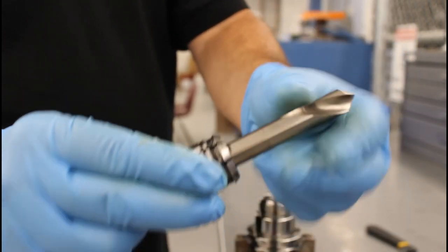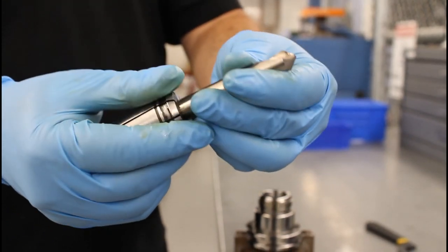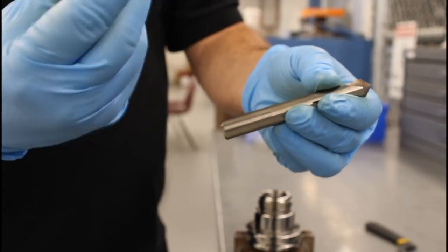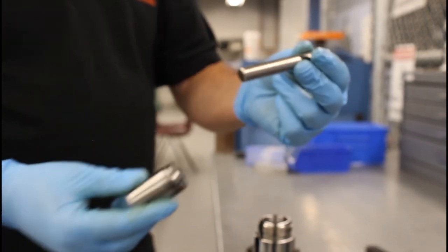This is going to fit perfectly in here - there's no slop, there's no falling off. You've got to make sure that you have the right size collet for the right size tool that you're going to put in.